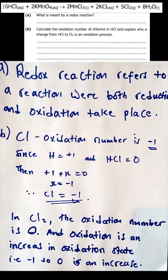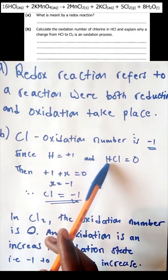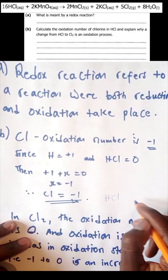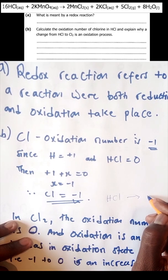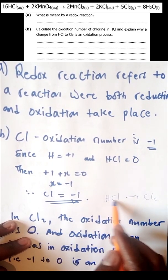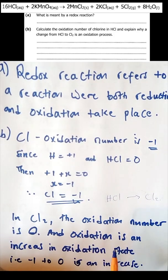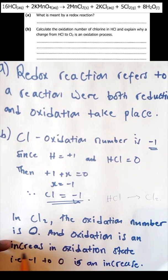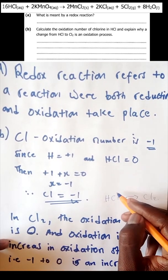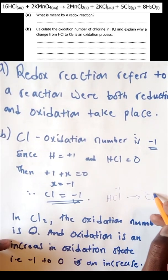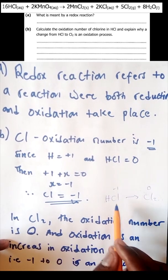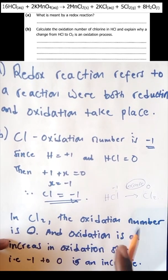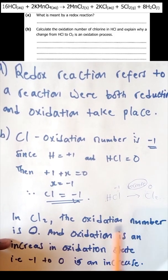Why is the change from hydrochloric acid to chlorine gas described as oxidation? Oxidation is defined as an increase in oxidation number. In HCl, chlorine has an oxidation number of negative 1. In neutral chlorine gas (Cl₂), the oxidation number is 0. Going from negative 1 to 0 is an increase, so because the oxidation number increases, the change from hydrochloric acid to chlorine is classified as oxidation.